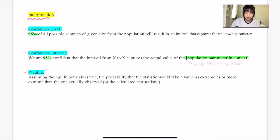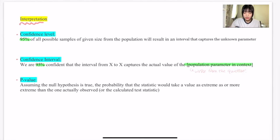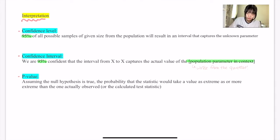For the confidence interval, you're going to say: We're 95% confident that the interval from x to x - and this value would be something you have computed after using these formulas - captures the actual value of the population parameter in context.